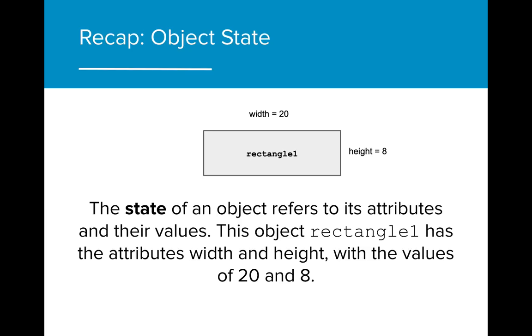In past lessons, we learned that objects have both a state and a behavior. The state of an object refers to its attributes and the value of those attributes. In this example, the rectangle class has these attributes of height and width. This particular rectangle, rectangle1, has a height of 8 and a width of 20.